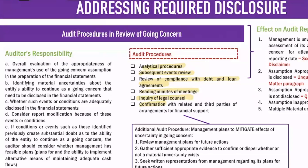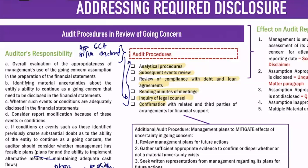Once you finish the audit procedures and determine whether the going concern assumption is reasonable and whether material transactions are disclosed, then there is no problem. To summarize, the auditor's responsibilities are: whether the going concern assumption is appropriate, whether material uncertainties or transactions are disclosed, and if there are plans, whether those plans are feasible. These are assessed using the audit procedures: analytical procedures, subsequent events review, review of compliance with debt agreements, minutes of the meeting, inquiry, and confirmation.